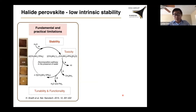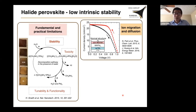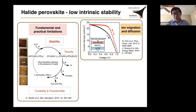In addition, there are some toxicity issues. But more importantly, not only the chemical instability — there is also an ion migration and diffusion issue. Because halide perovskite is an ionic solid, this ionic compound usually has a lot of cation and anion vacancies. This large number of vacancies will facilitate ion diffusion and migration. For example, in a solar cell device, if you scan the current-voltage profile in different directions, you get completely different I-V curves. That's mostly induced by ion migration, which will also decrease the stability of the device.